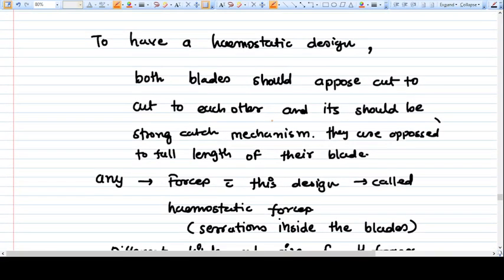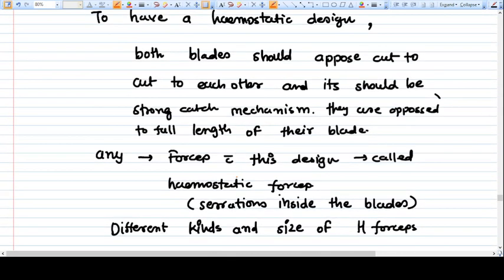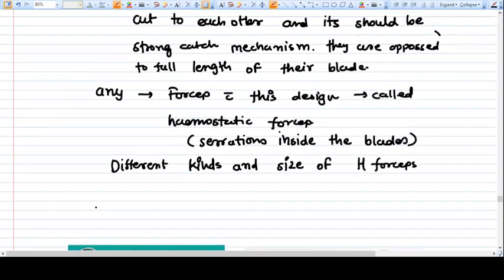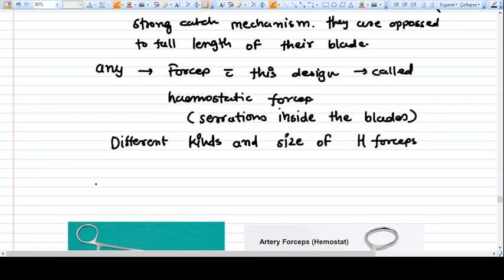So to have a hemostatic design, both blades should oppose cut to cut to each other and should have a strong catch mechanism. That's why they are opposed to each other with the full length of their blade. This design is called hemostatic forceps design, and it is common in every hemostatic forceps you get.